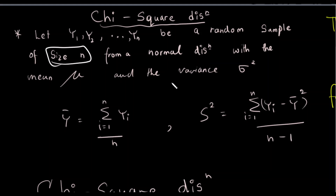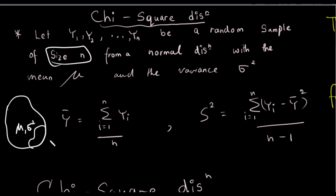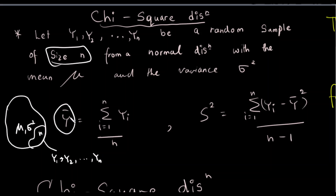We use parameters mu and sigma. For a random sample, we have calculated the mean. We are talking about y-bar. So we can define y-bar as well as y1, y2, and y3.